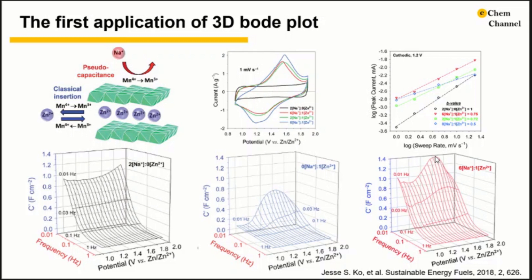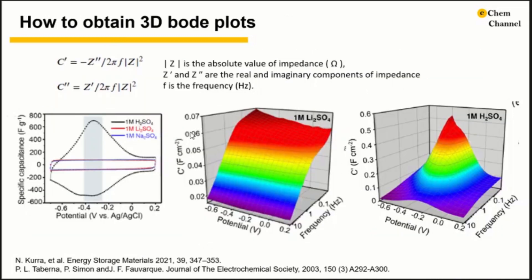Here we show another example that 3D Bode plot is used to understand the charge storage mechanism in 2D titanium carbide with acidic and neutral aqueous electrolyte. In the acidic electrolyte, titanium carbide shows a pair of strong peaks corresponding to surface redox reaction. Meanwhile, the CV is rectangular in the 1 molar zinc sulfate electrolyte.